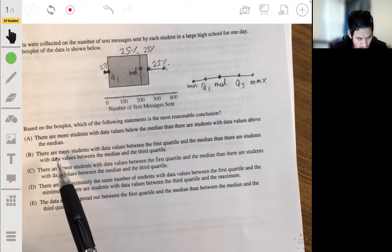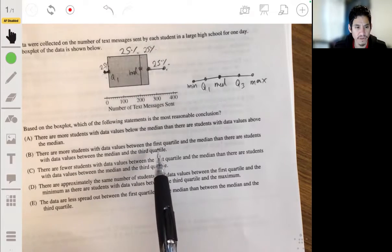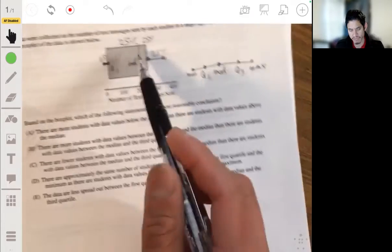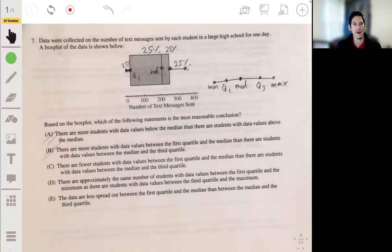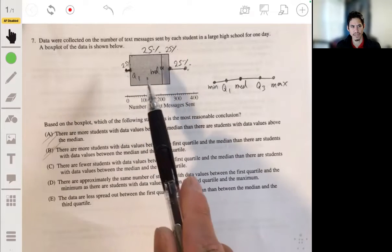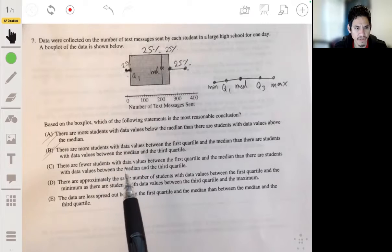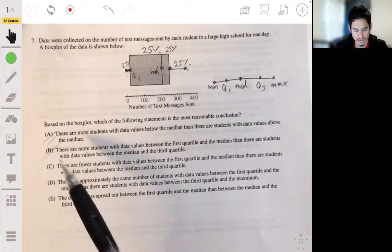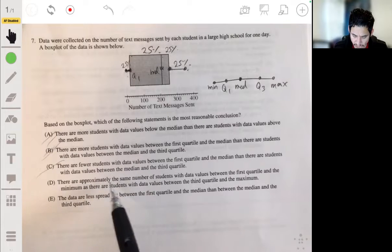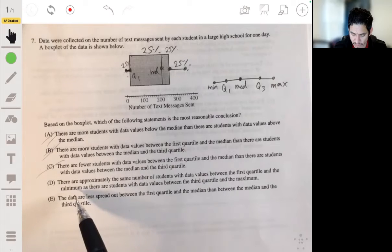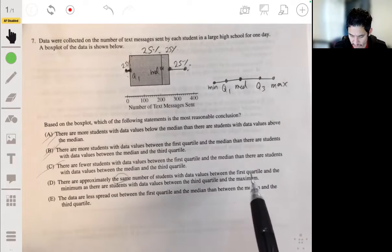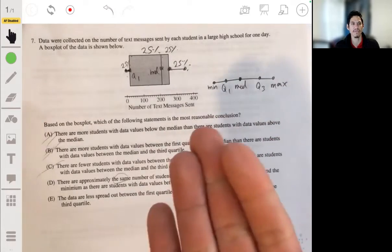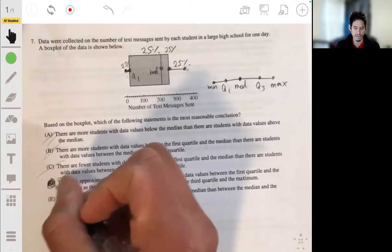There are more students with data values between the first quartile and the median than there are students with data values from the median and the third quartile? So, as I just said, they want to really see if you don't get tricked by the way this looks. So it's not B either. There are fewer students with data values between the first quartile and the median than with data values between the median and the third quartile? It's not C either. There are approximately the same number of students with data values between the first quartile and the minimum as there are between the third quartile and the maximum? And that's correct. 25% of the total amount of students are in both regions, so the answer is indeed D.